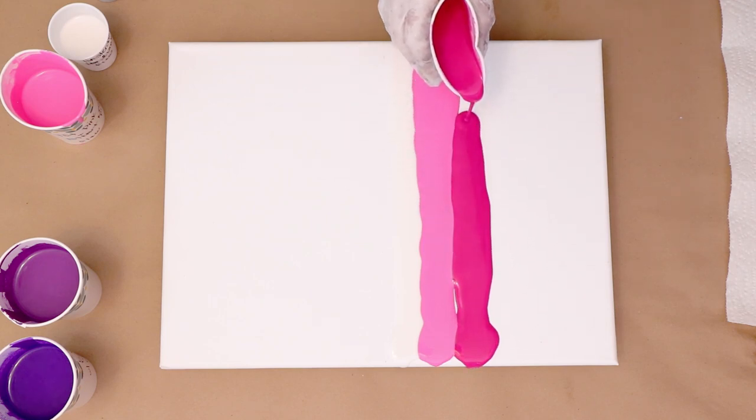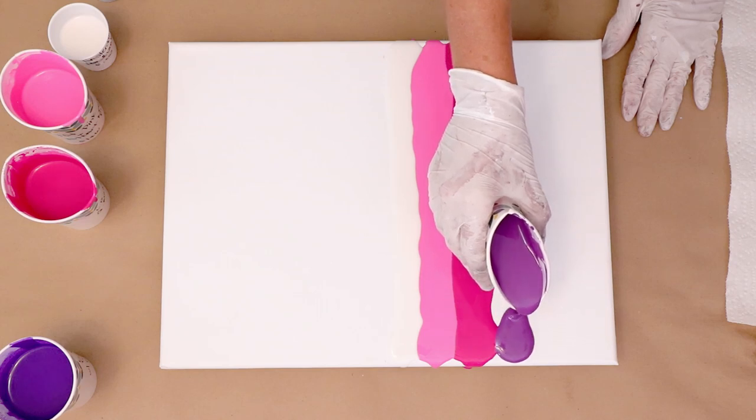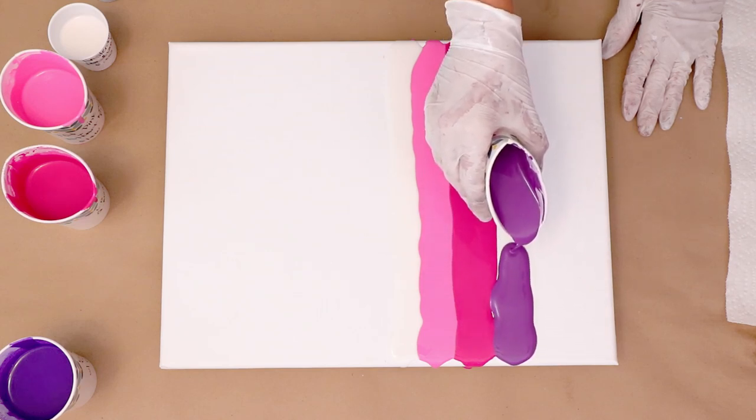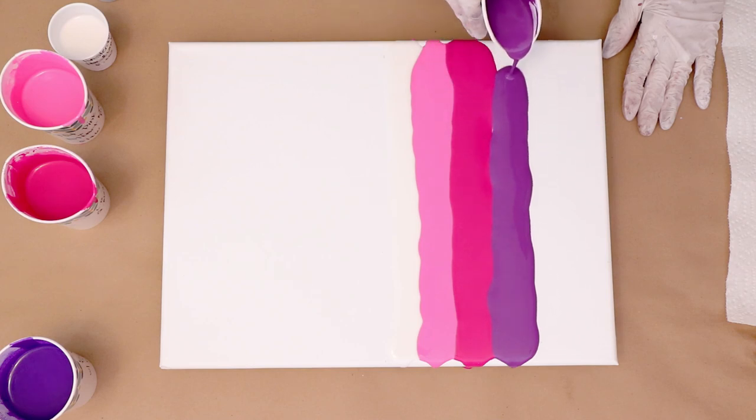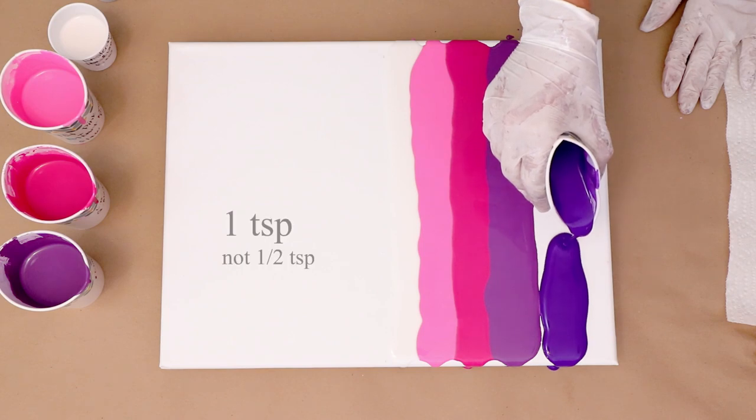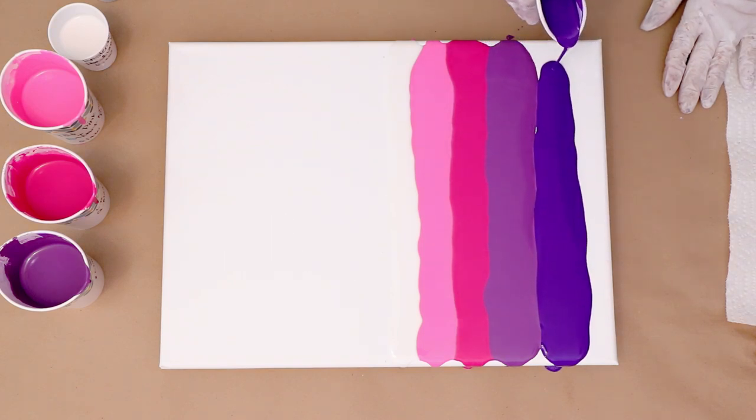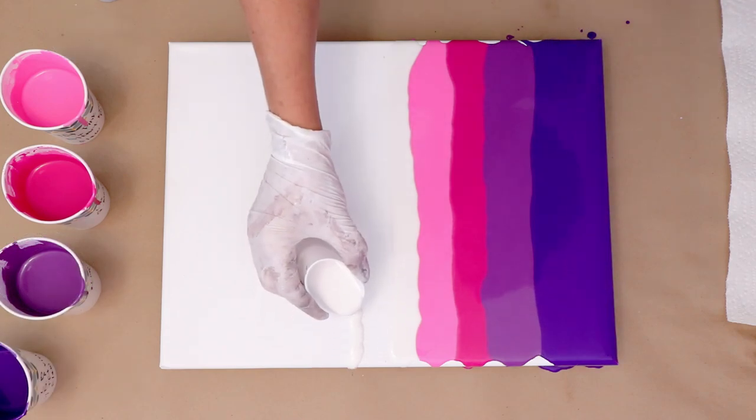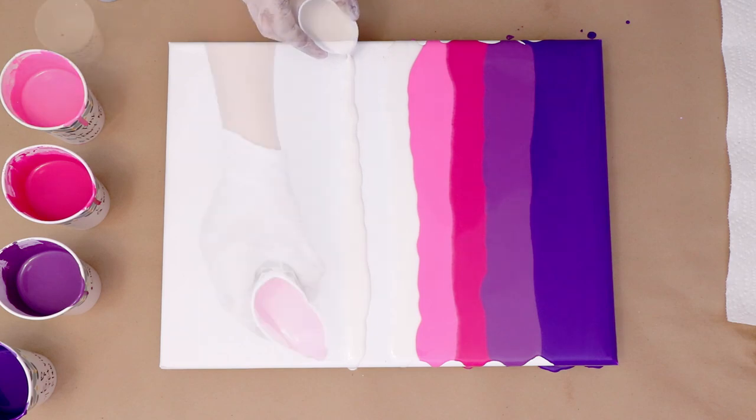And I will be swiping with my black cell activator, which is Amsterdam lamp black. I use a half a teaspoon of that. I mix that with three tablespoons of Flotrol, and then I do add a little bit of water to get to the consistency that I like.